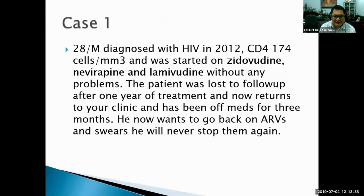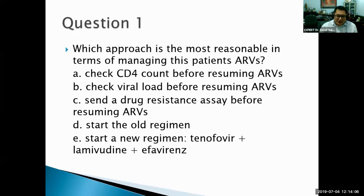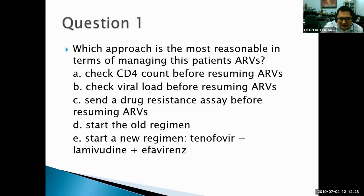Case 1: A 28-year-old male diagnosed with HIV in 2012 with a CD4 count of 174 was started on zidovudine, nevirapine, and lamivudine. He was lost to follow-up after one year and now returns after being off medications for three months, swearing he'll never stop again. What is the most reasonable approach — check CD4, check viral load, send drug resistance assay, start the old regimen, or start a new regimen of tenofovir plus lamivudine plus efavirenz?